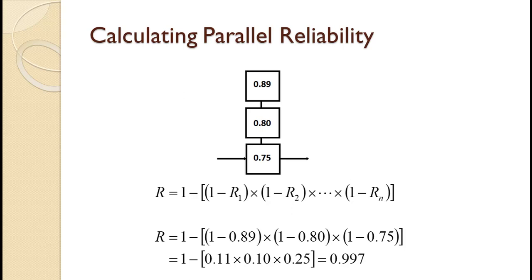Note that with parallel reliability, the overall reliability will always be higher than the highest component reliability. Additionally, the more redundant components there are, the higher the overall reliability, even when those redundant components have low individual reliability.